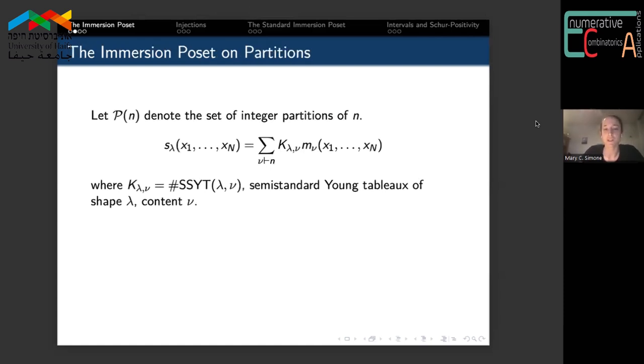We'll let P(n) denote the set of integer partitions of n. We have this expansion of the Schur polynomial sλ in terms of monomial symmetric polynomials, where these coefficients Kλν count the number of semi-standard Young tableaux of shape λ with content ν.